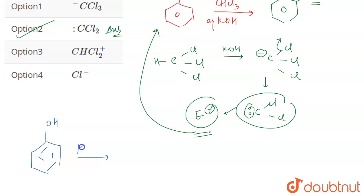So when NaOH or KOH act upon it, it abstracts the H and we get O negative.